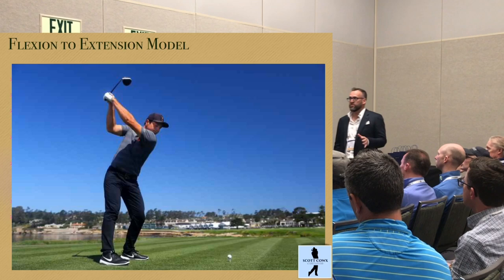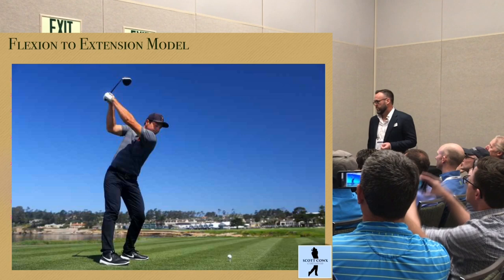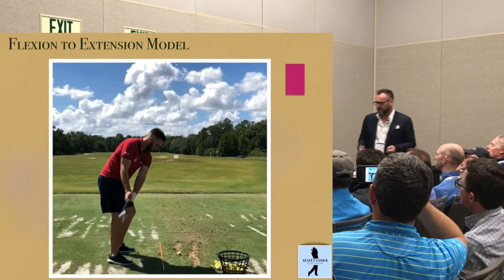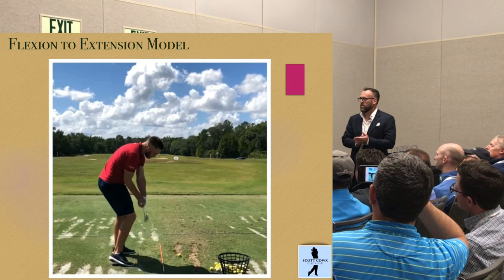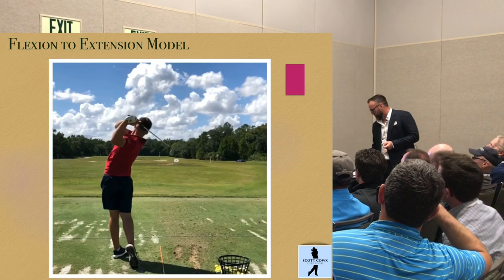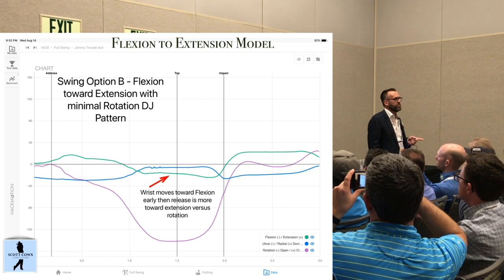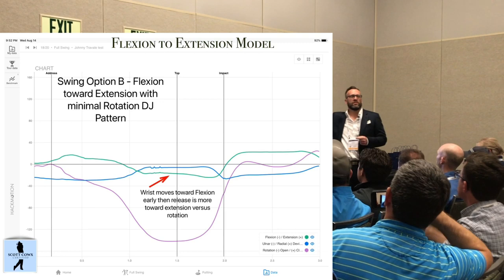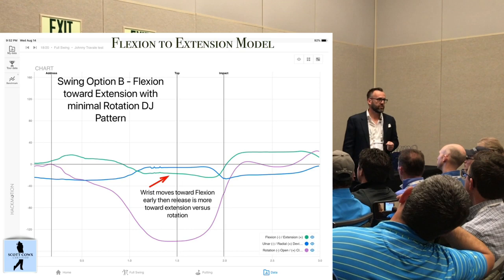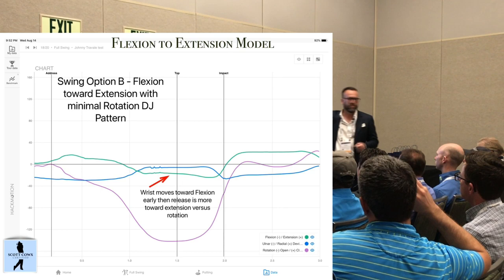The next model is a flexion-to-extension model — what I call the Cobra pattern. Victor Hovland is a good example of this, and one of my NCAA players, Johnny Trevally, definitely exhibits it. This is a little different — a more new-school release pattern — and it kind of looks completely backward. This is exactly the value of why HackMotion is so important. Because if I try to teach Johnny to hit shots using the first wrist pattern, this tends to be his signature release.